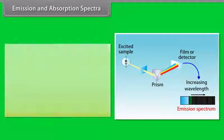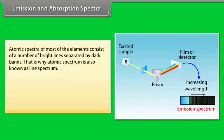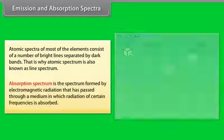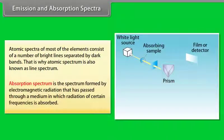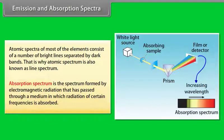Atomic spectra of most elements consist of bright lines separated by dark bands — hence called line spectra. Absorption spectrum is the spectrum formed by electromagnetic radiation that has passed through a medium in which radiation of certain frequencies is absorbed.